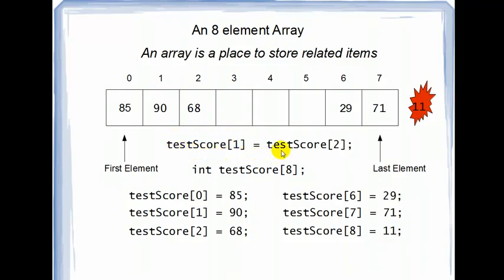It's going to take that value and it's going to put it in to test score element one. So in this case, it's going to take this 68 and put it in here. Or I should say copy it. It's not going to do anything with this. So when you do that, what happens? The 90 goes away and it's replaced by 68.